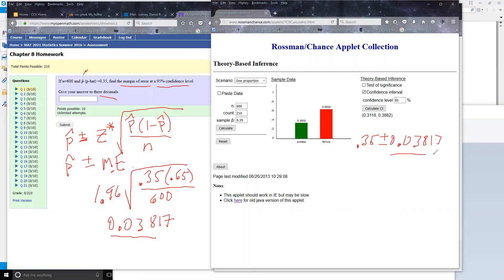So this is the margin of error. And what they've done to get this is they've done 0.35 minus the 0.03817 and 0.35 plus the 0.03817.